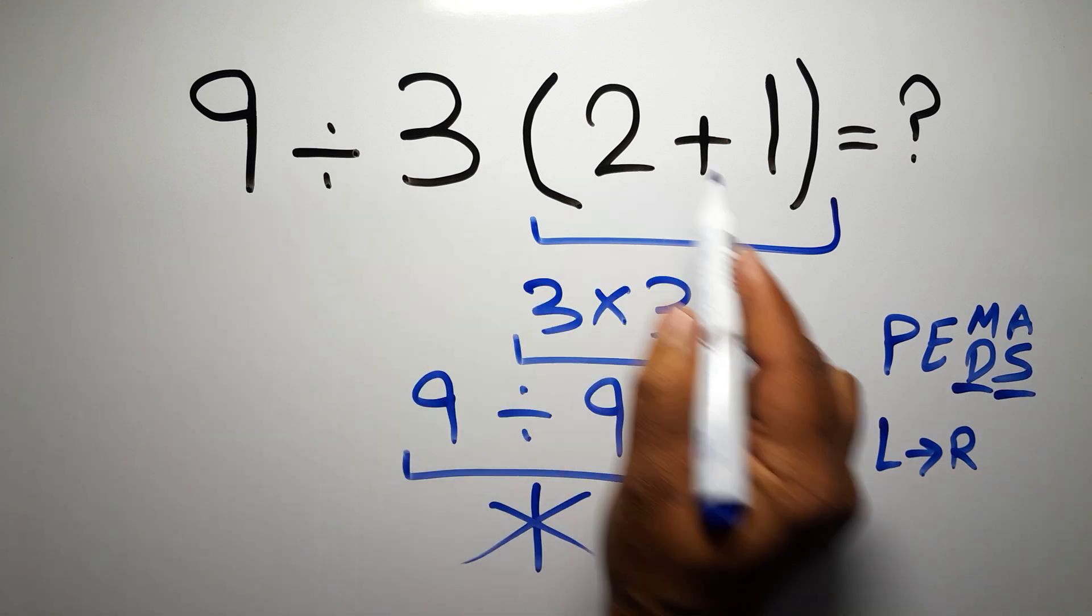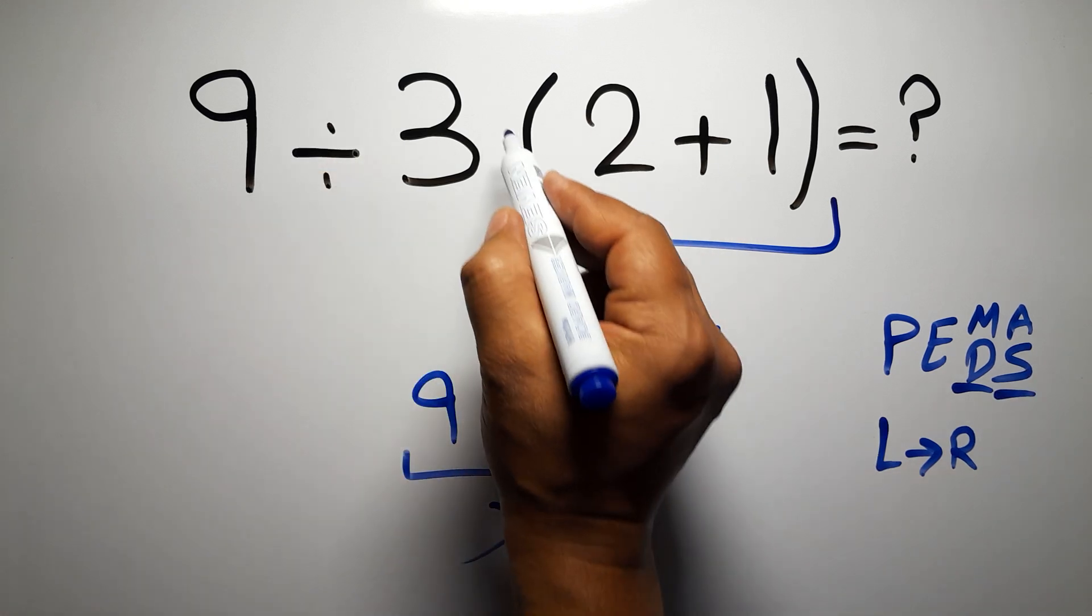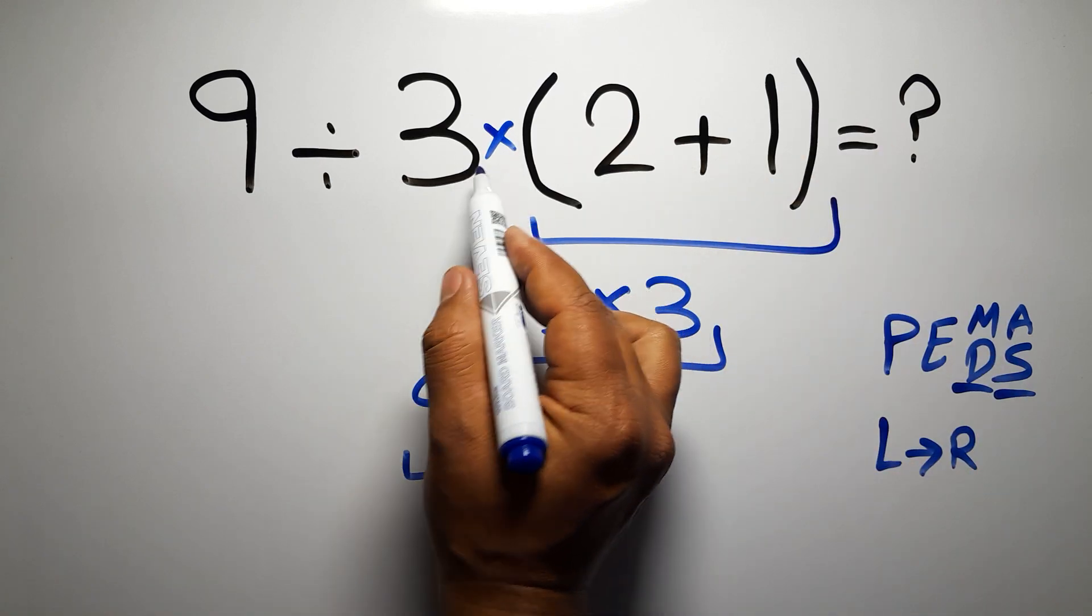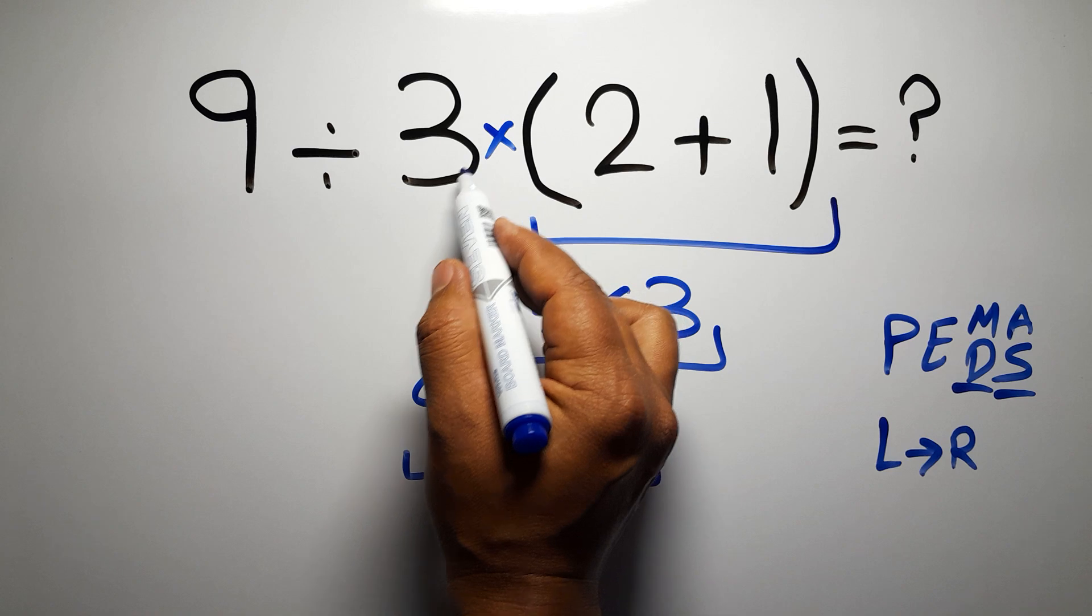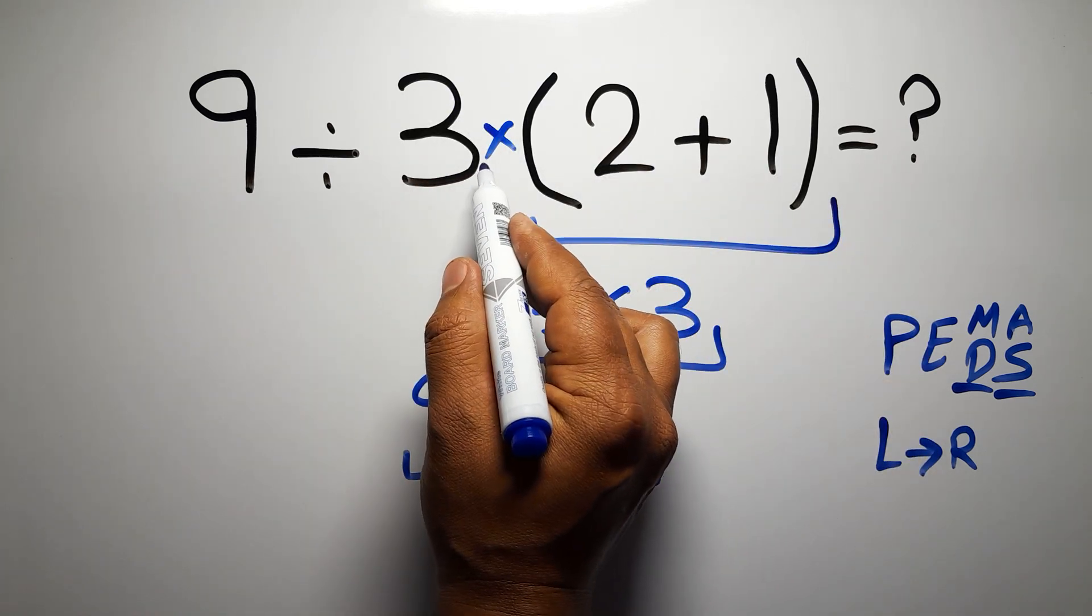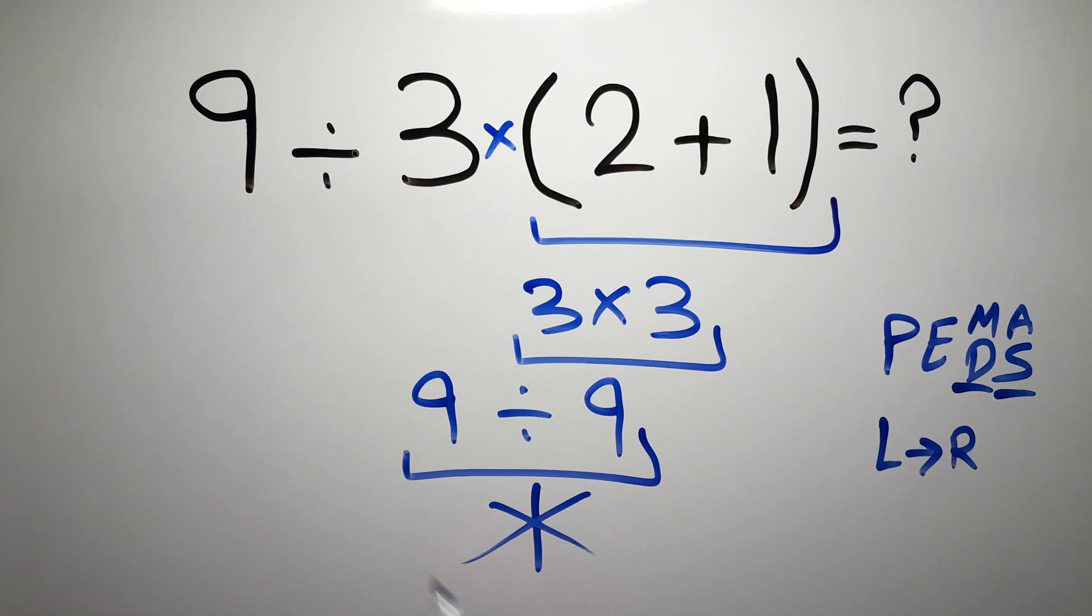In this expression we have 1 division, 1 multiplication and 1 parentheses. Here we have a multiplication, because in mathematics when a number is placed next to parentheses, it means multiplication and we usually don't write the multiplication sign for brevity.